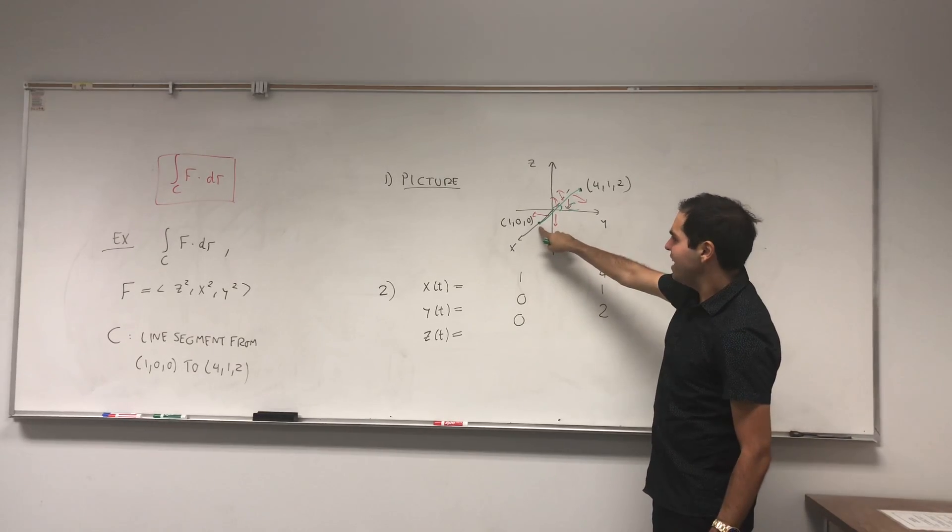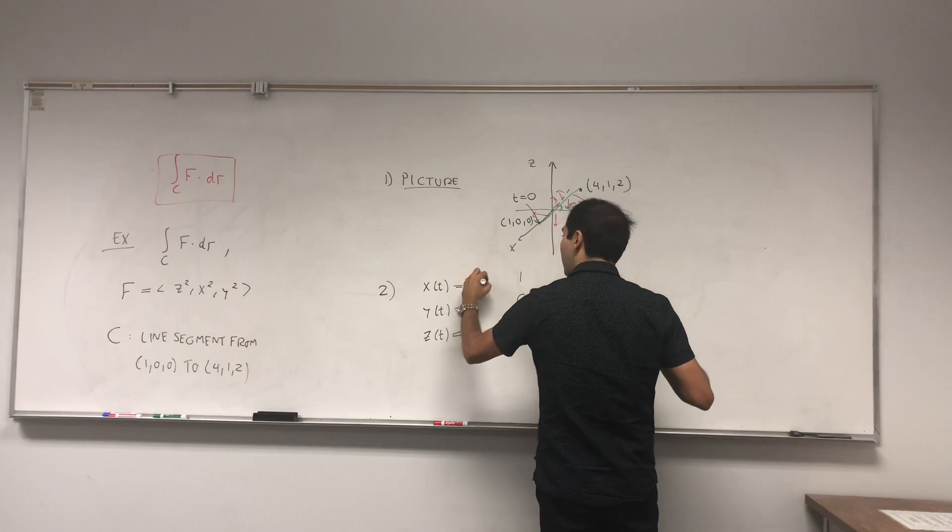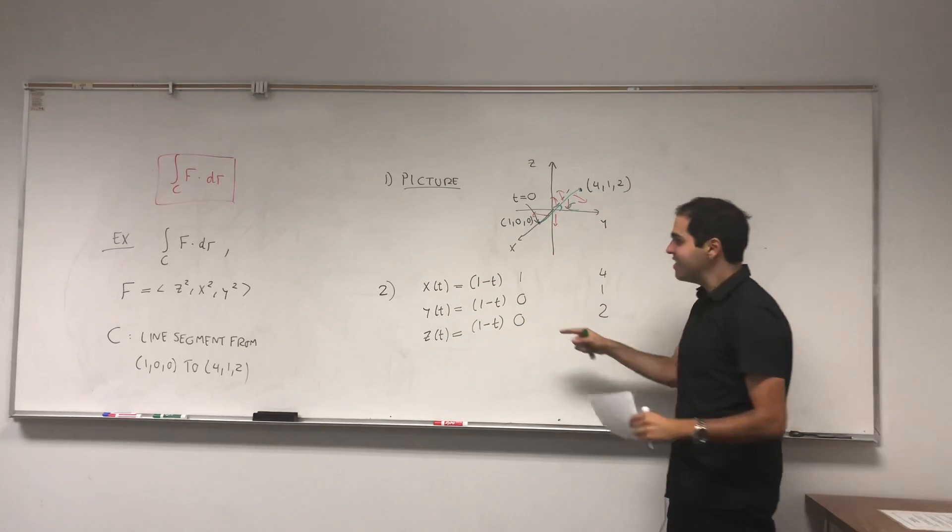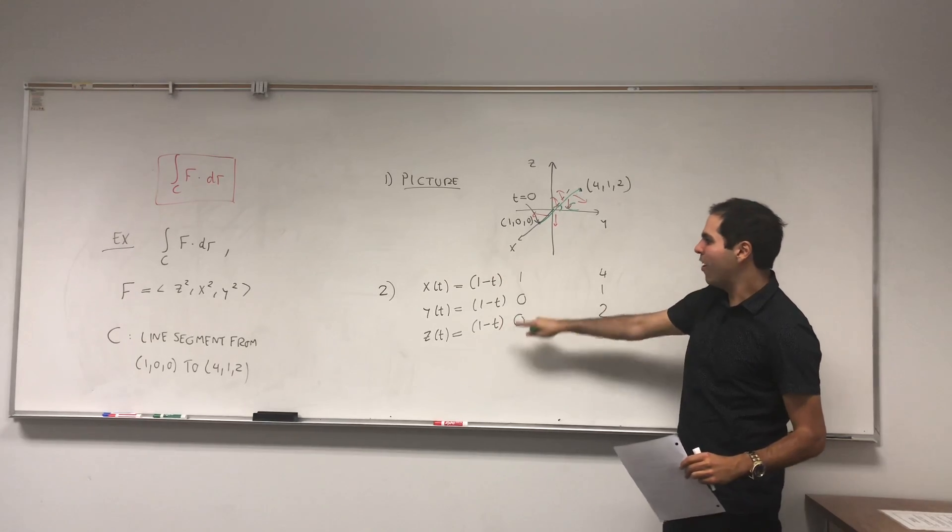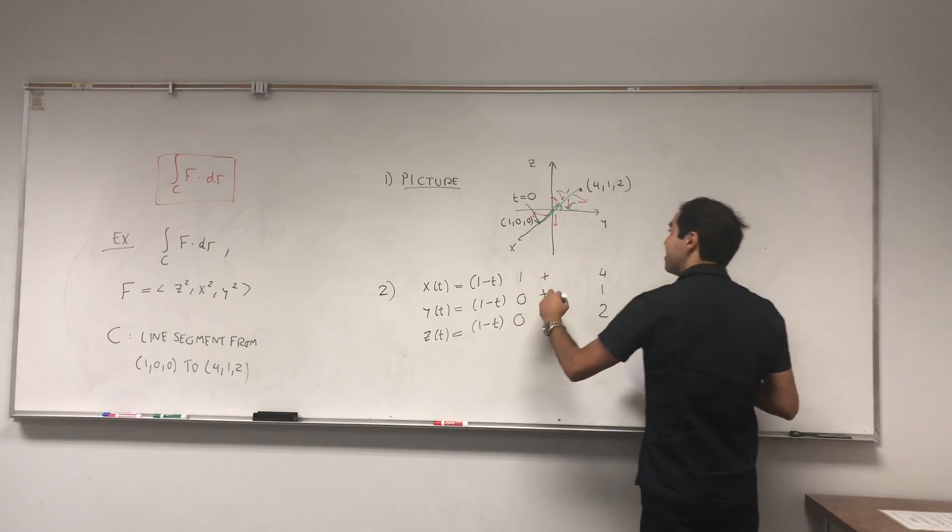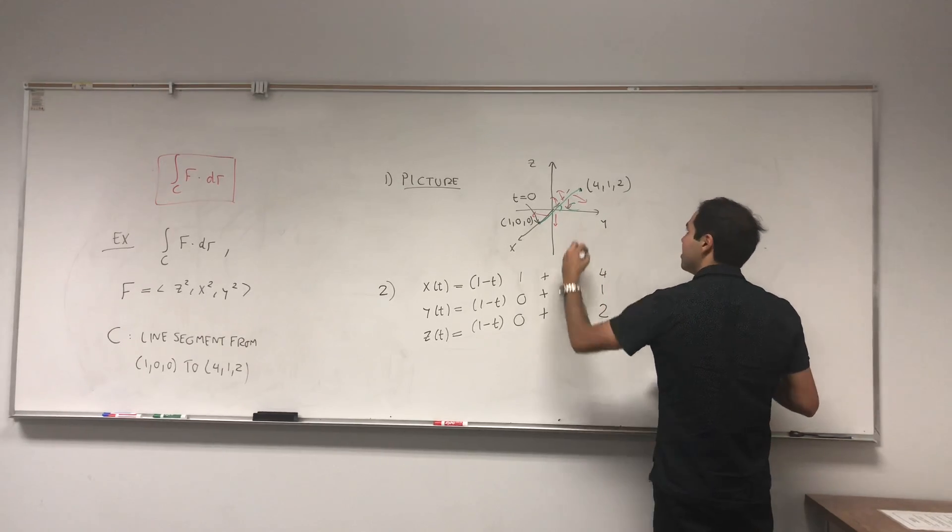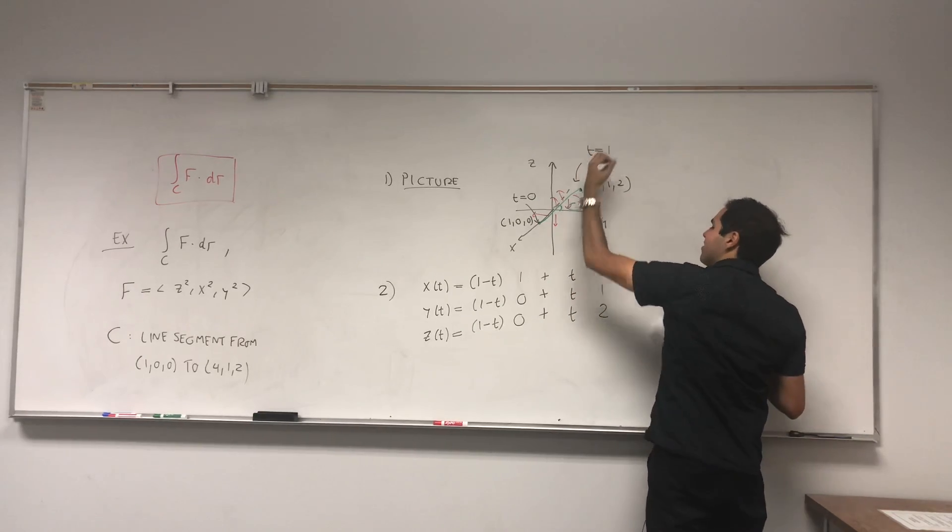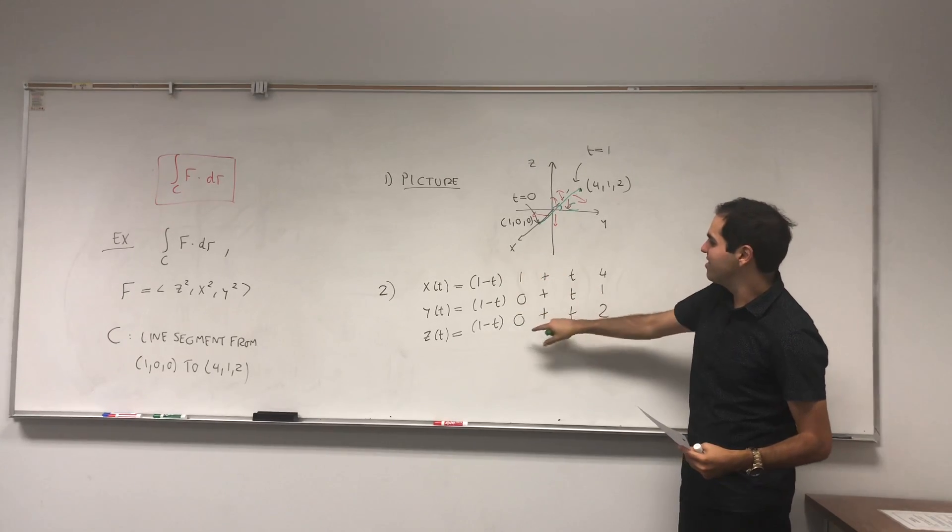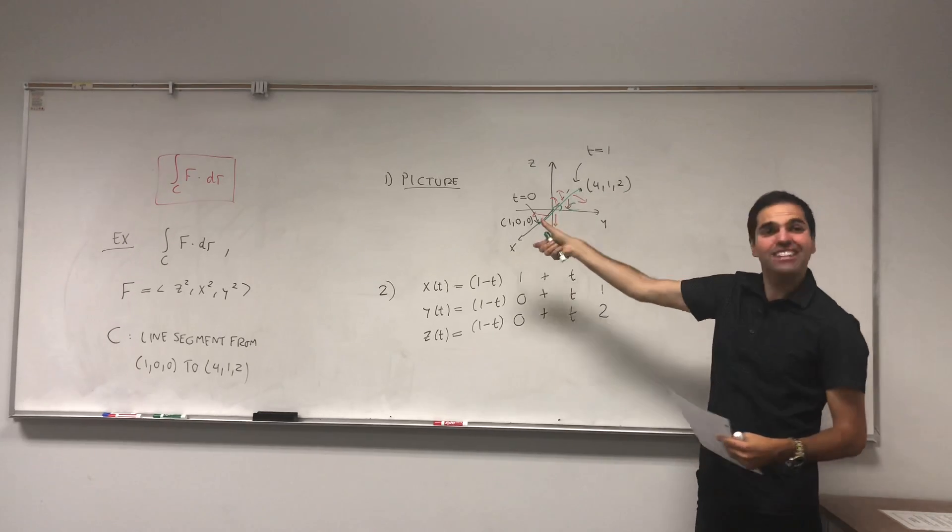So at the beginning, at t equals 0, you want to have the point (1, 0, 0). That's why you put (1-t)'s here. Because at t equals 0, we want this to be 1, because we want to start at (1, 0, 0). Whereas at t equals 0, we don't want to have (4, 1, 2), so you put t's here. And essentially, that's why I call it an on and off switch, because here you put it on and you get (1, 0, 0), and here you have it off, so (0, 0, 0).